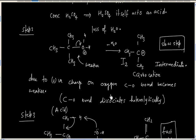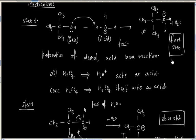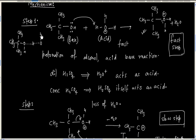We can also write the transition states. Since we have two intermediates, we will have three transition states. In transition state 1, an oxygen-hydrogen bond is being formed and another oxygen-hydrogen bond is being broken. Oxygen will have a delta-plus charge and carbon will have a delta-plus charge.